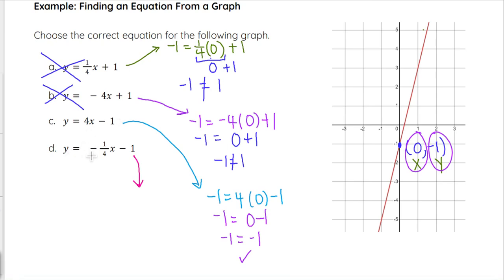We see y equals negative 1 fourth x minus 1. Looking at that, we have negative 1 equals negative 1 fourth times 0 minus 1. We have negative 1 equals 0 minus 1. Negative 1 therefore equals negative 1, which is a true statement. So unfortunately, that does not allow us to eliminate D. So we are now looking between C and D.